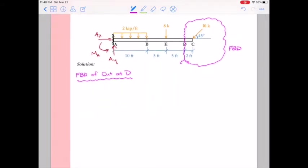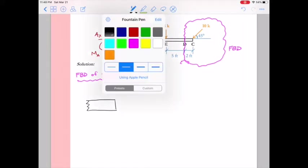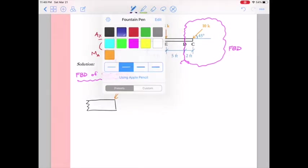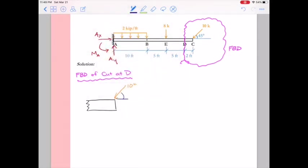So taking this free body diagram, we're going to make a cut at D and we're going to just sketch what we see inside the bubble. So I have a beam with a cut. Inside the cut I have a 10 kip load acting at an angle 45 degrees to the horizontal, so I'll make sure I get that sketched in properly.